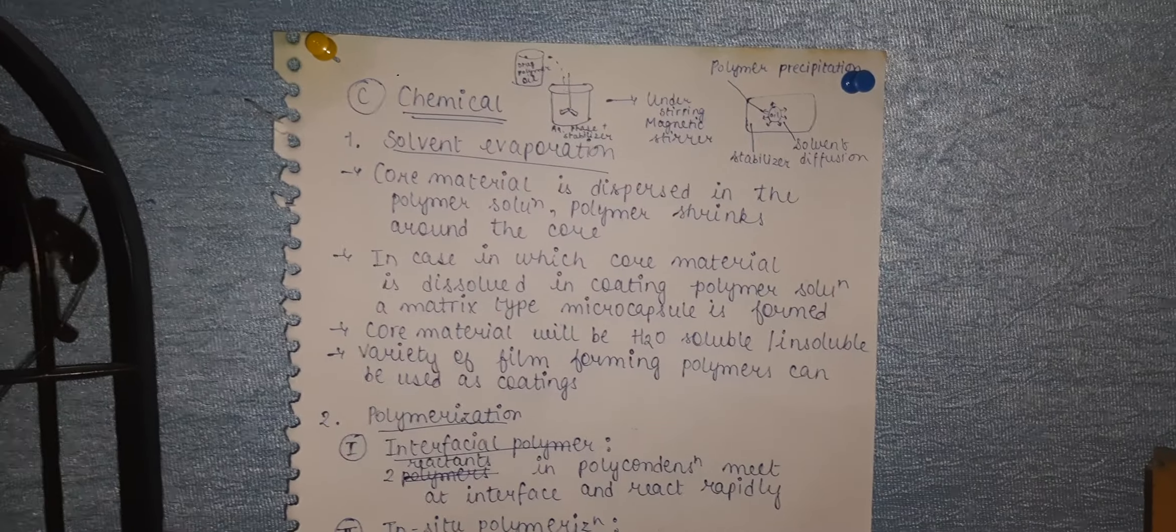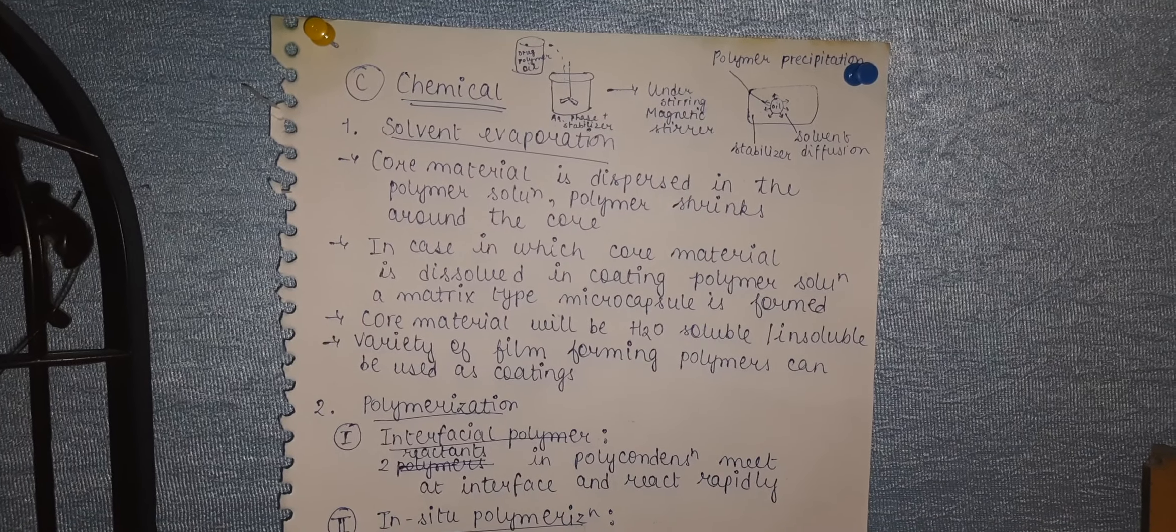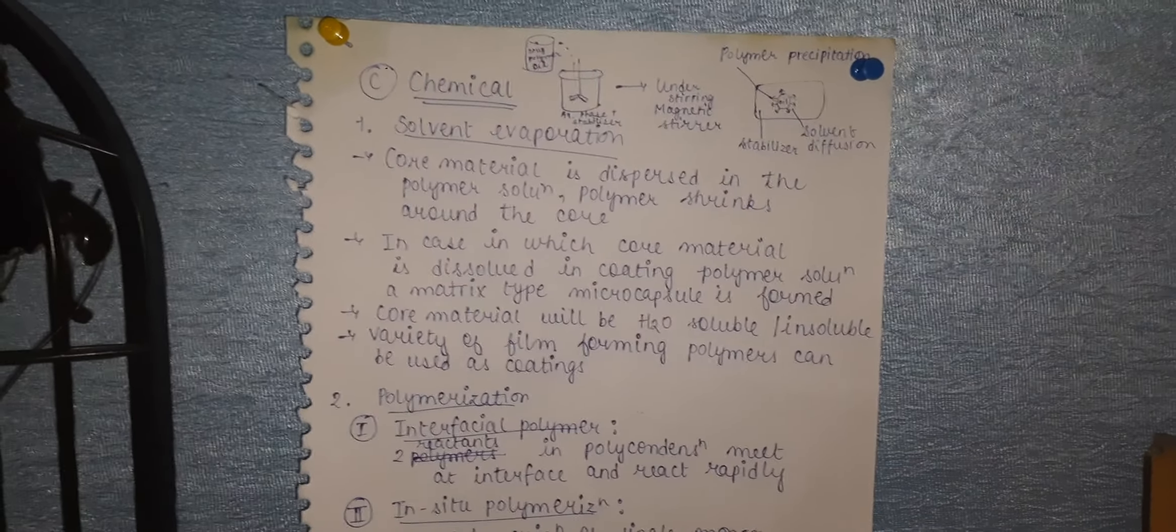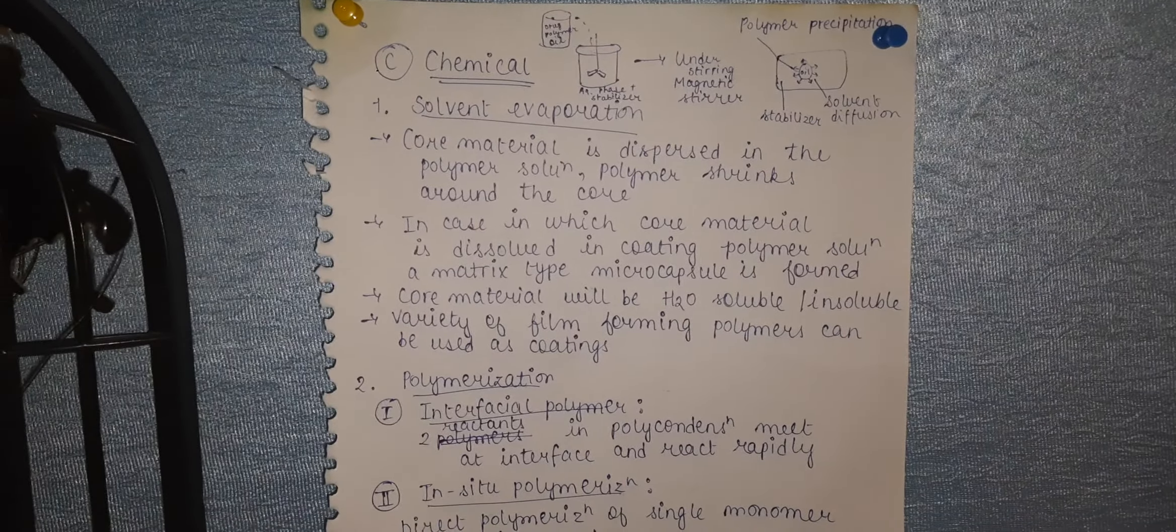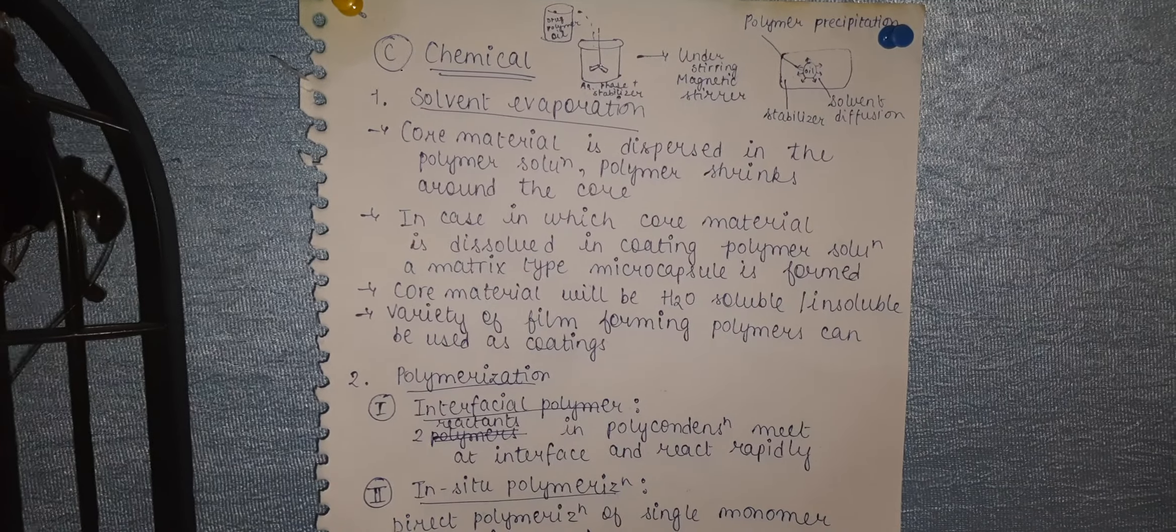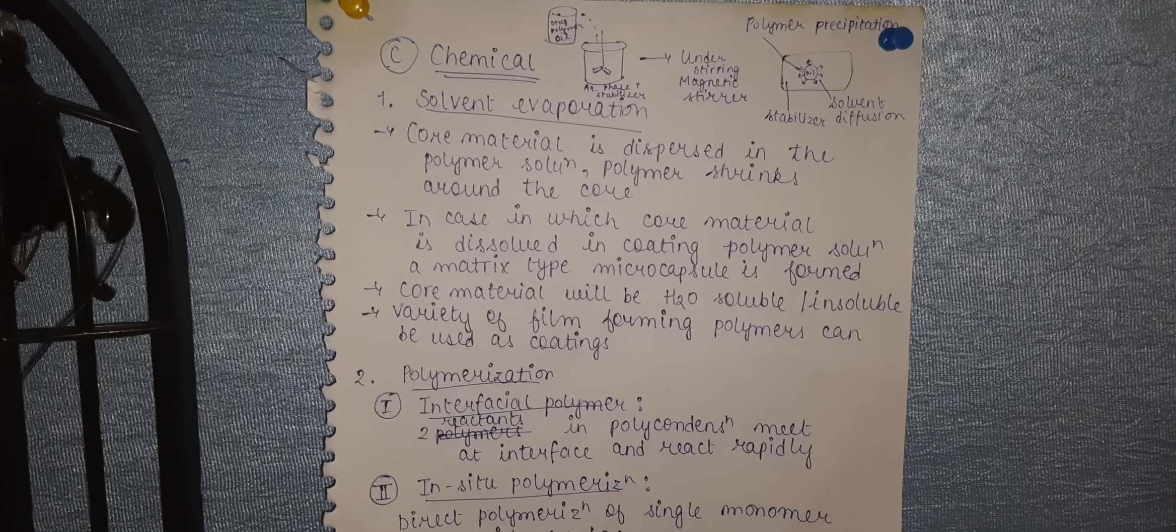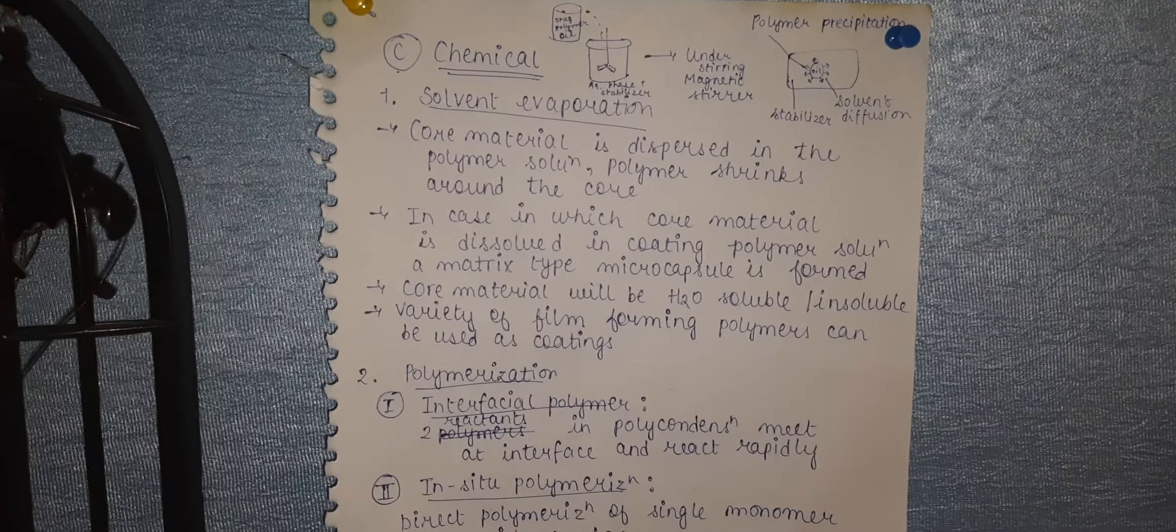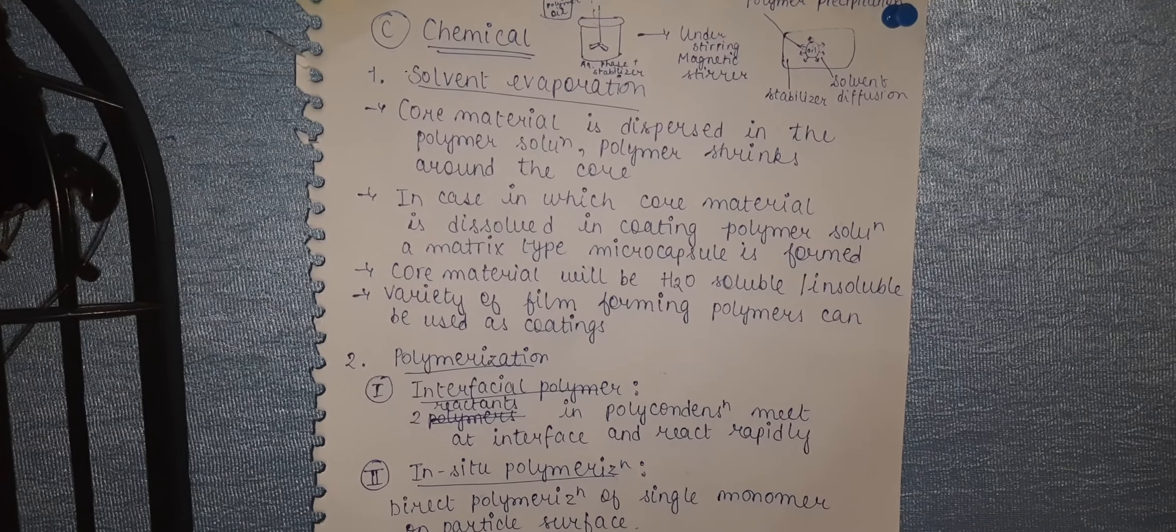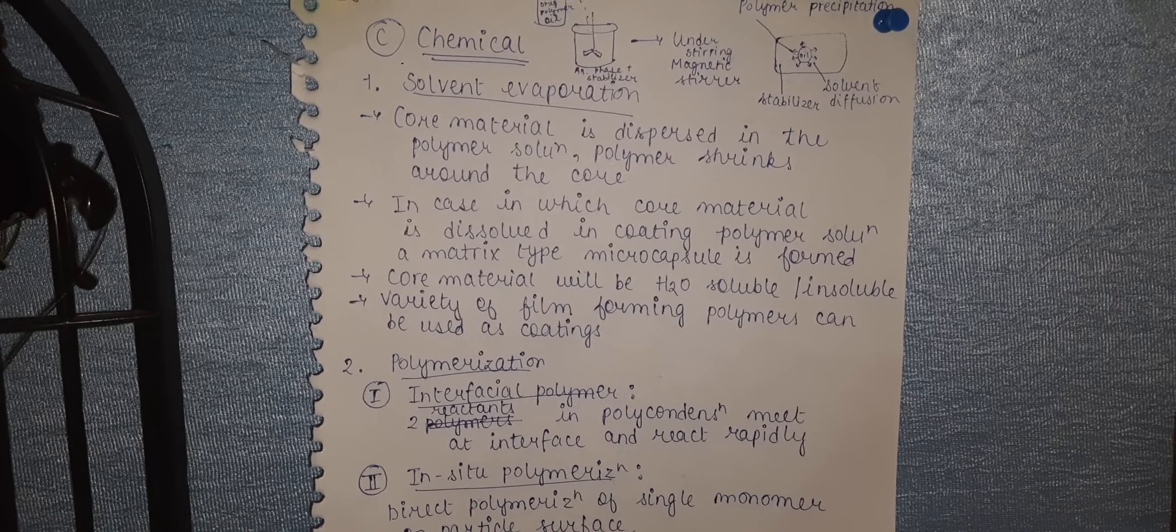In this video, we're going to discuss microencapsulation. In previous videos, we covered what microencapsulation is, how it's done, and discussed three types: physical, physiochemical, and chemical. Here, we'll focus on chemical methods, which have two types: solvent evaporation and polymerization, starting with solvent evaporation.